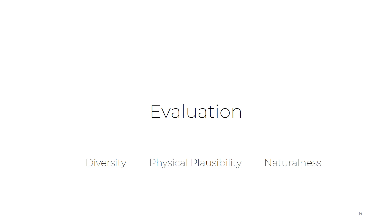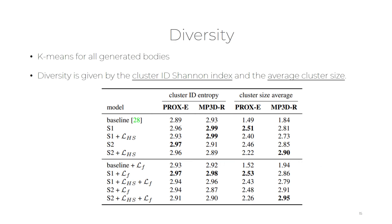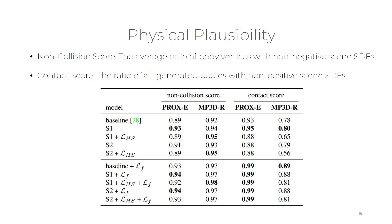We quantitatively evaluate our results by diversity, physical plausibility, and naturalness. To evaluate diversity, we use the cluster ID Shannon index and the average cluster size — the higher these two scores, the better. The results show that the S1 model without human-scene loss performs better, and the geometry-aware fitting can consistently improve performance. For physical plausibility, the S1 model outperforms other methods and fitting can consistently improve performance.